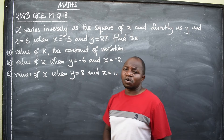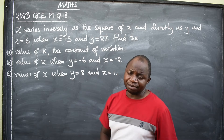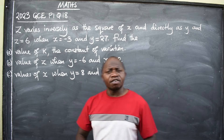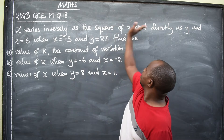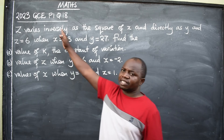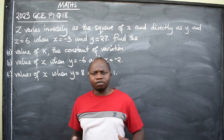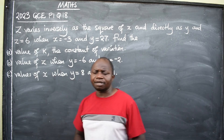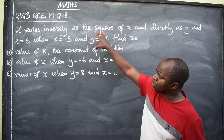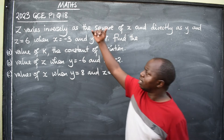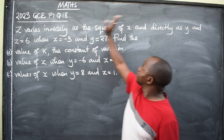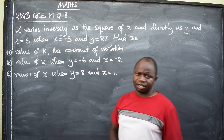The topic is called variation. We have different types of variation: we have direct variation, we have inverse variation, we have joint variation, and partial variation. Looking at this question, it is a combination of inverse and direct variation.